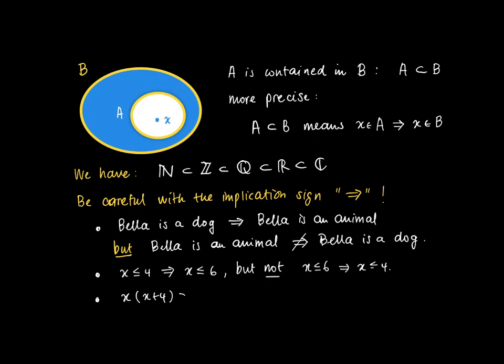Look at the following. x times x plus 4 is larger than 0. It does not mean that x is larger than 0 and x plus 4 is larger than 0. However, if x is larger than 0, then we see that x times x plus 4, x plus 4 is also larger than 0, so the product is also larger than 0. So again, we have a direction of our implication which is crucial here.